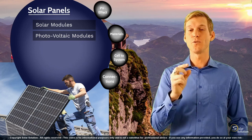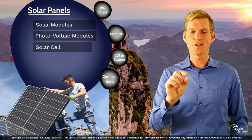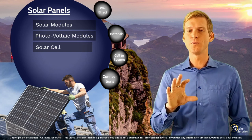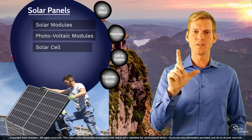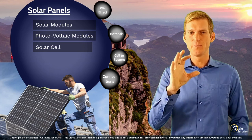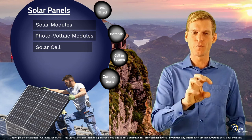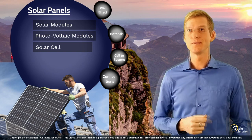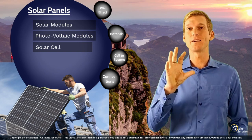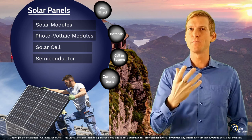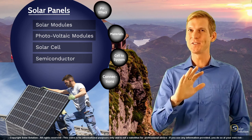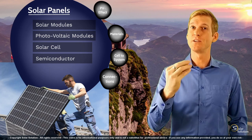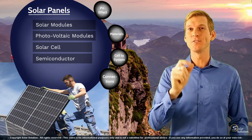There are two more terms I want to point out. The first is solar cell. A solar cell is the building block of a solar module — those square or rectangular, blue or dark pieces that form the core element of a solar module. The last term is semiconductor, which is a type of material that conducts electricity only under certain conditions, and it's the material used to make the solar cell.